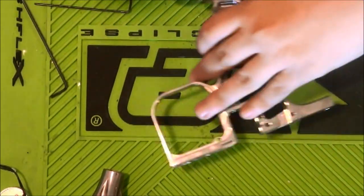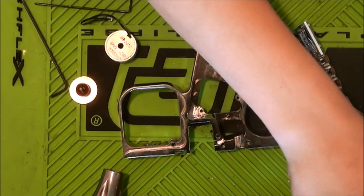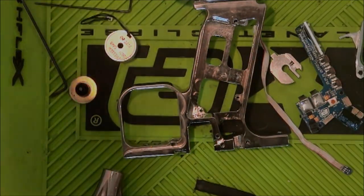So those are all the parts for an e-blade autococker. Alright, thanks for watching.